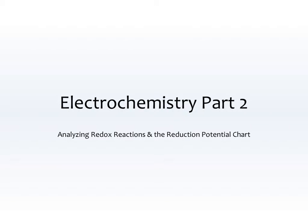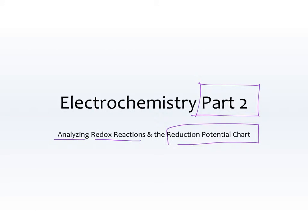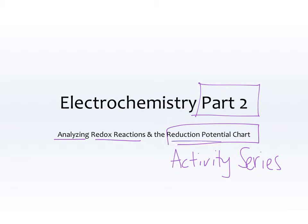Welcome back to electrochemistry. In part two of this unit, we are going to be analyzing redox reactions and looking at the reduction potential chart. This will be another review unit from earlier in the year, but earlier we used the activity series instead of the reduction potential chart. We're going to talk about the difference between the two and use the reduction potential chart instead of the activity series.